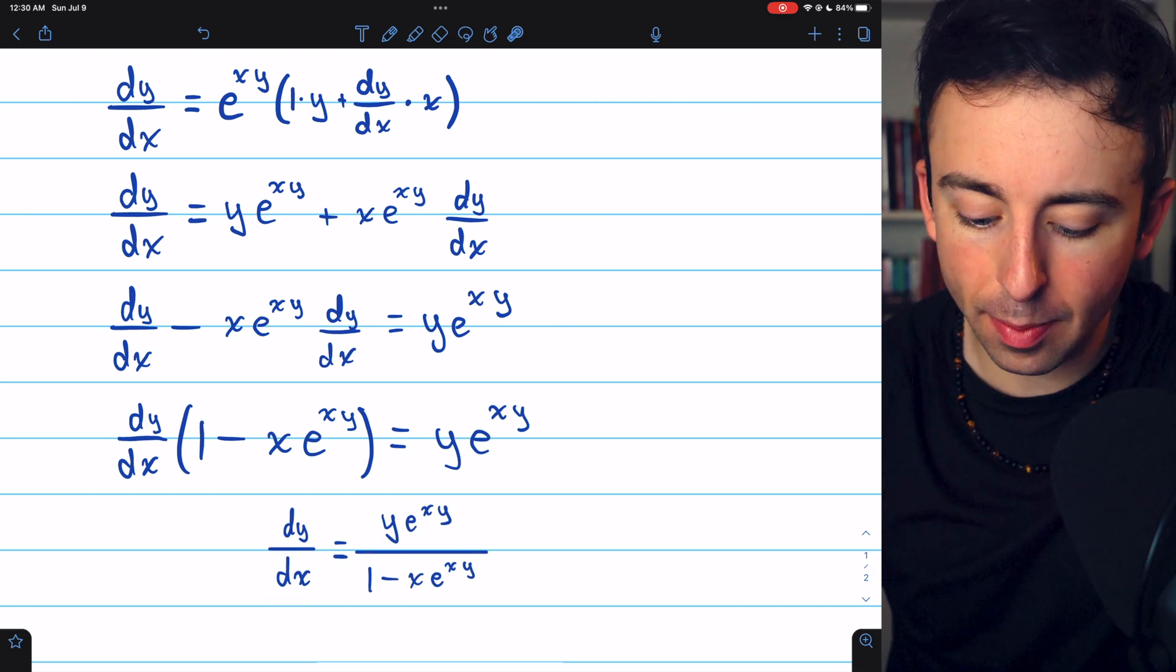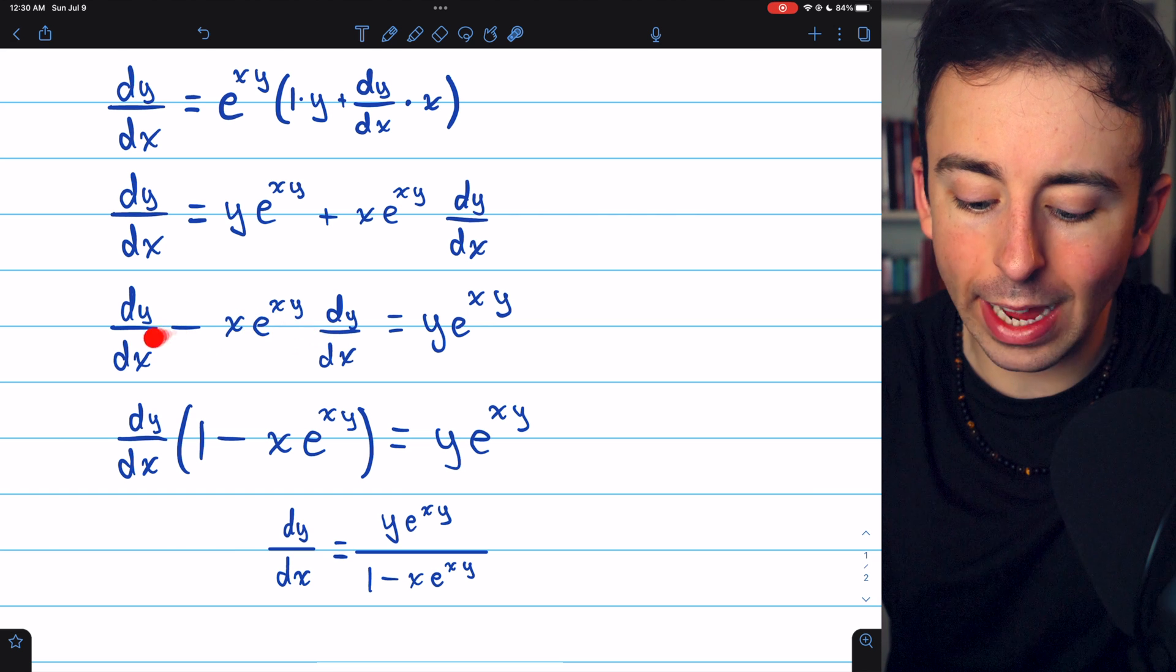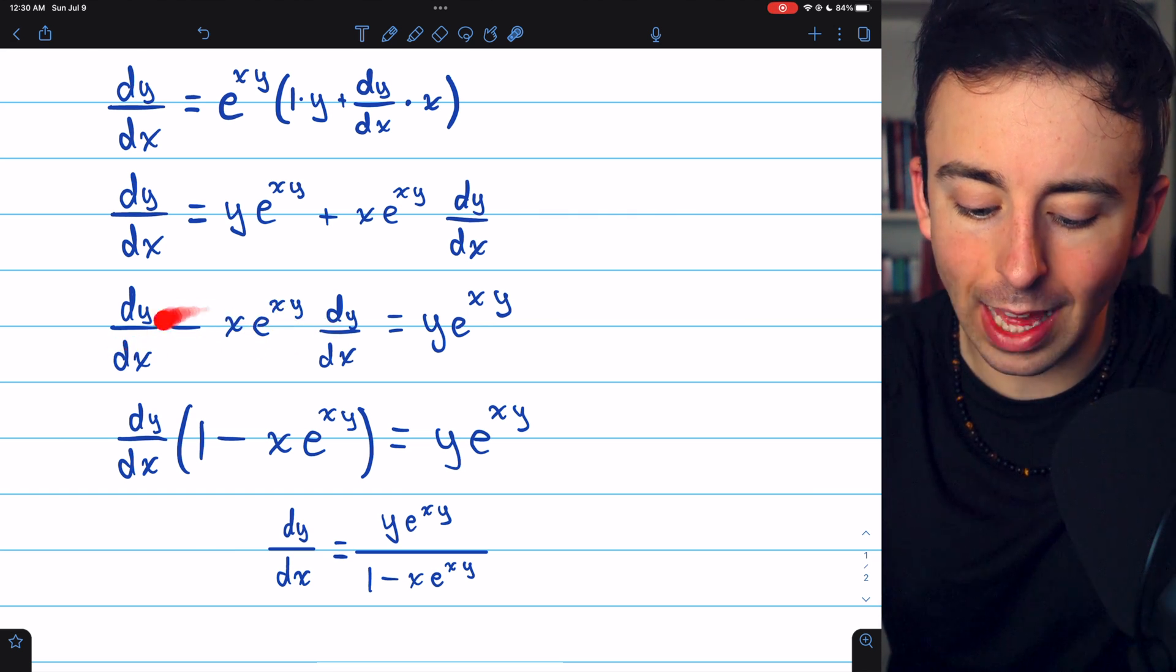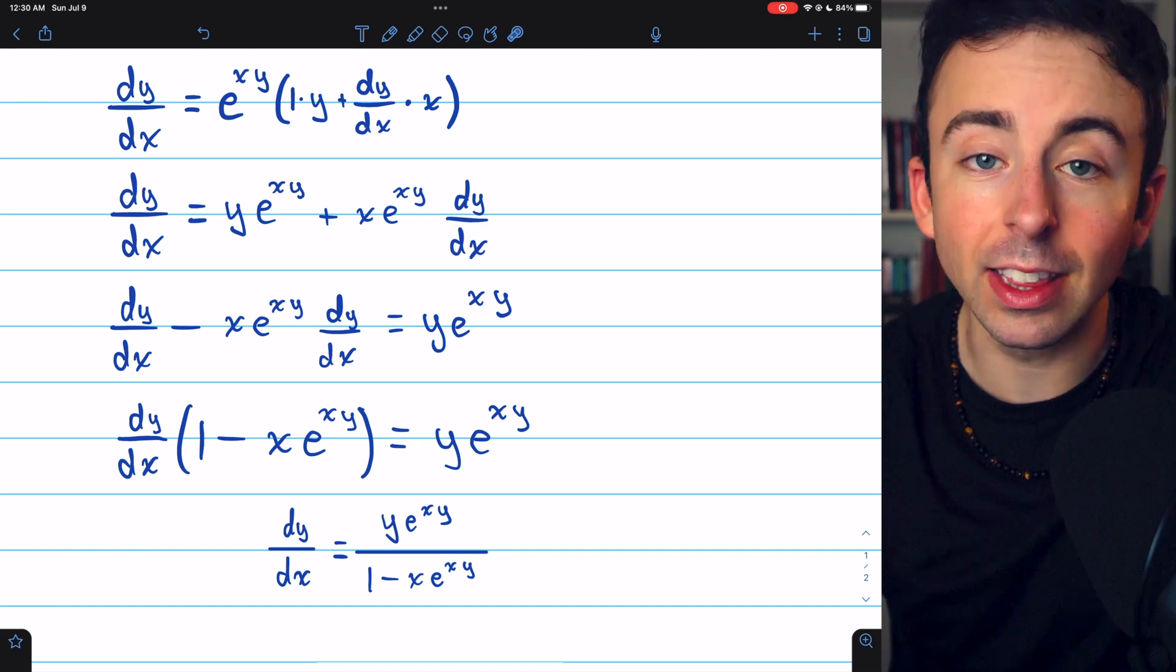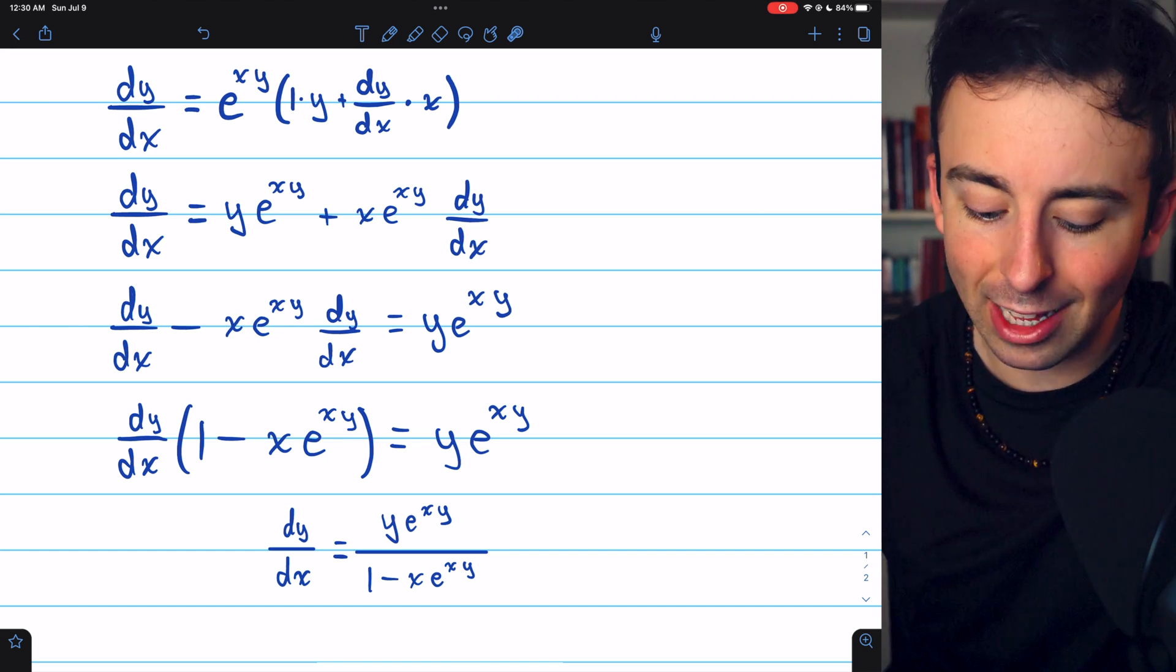One more time in the last few steps, we just factored dy dx out of both terms here on the left, which left us with 1 minus x e to the xy in the parentheses. Divide both sides by that,